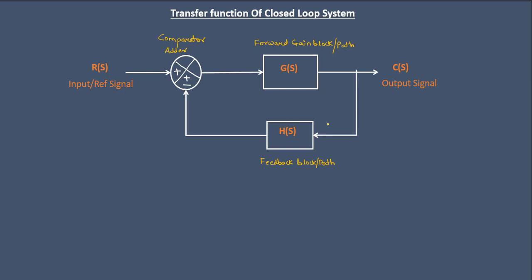Let us find the input and output of each block. Starting with the feedback block H: the input to the H block is the output signal C, and the feedback block H produces an output called the feedback signal, represented by B. So for this feedback block, input is C and output is the feedback signal. Now let us study the comparator.